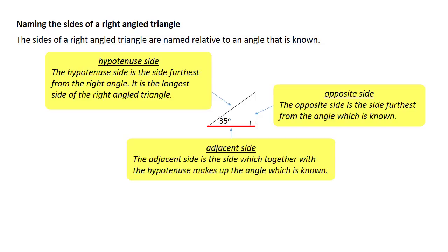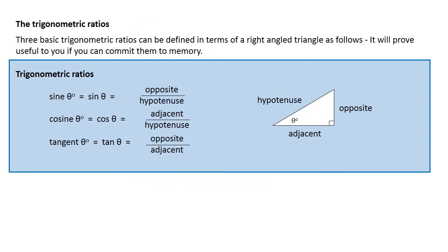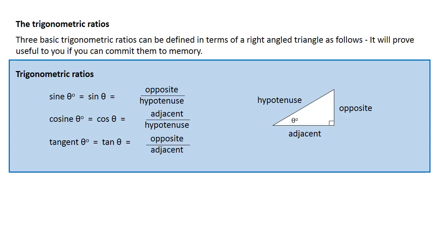After you've learnt the names of the sides of a triangle, it's time to learn three trigonometric ratios. The ratio of the length of the opposite side to the hypotenuse side is called the sine ratio. The ratio of the length of the adjacent side to the length of the hypotenuse side is called the cosine ratio. We normally abbreviate these just down to three letters: sine, cos, and tan.